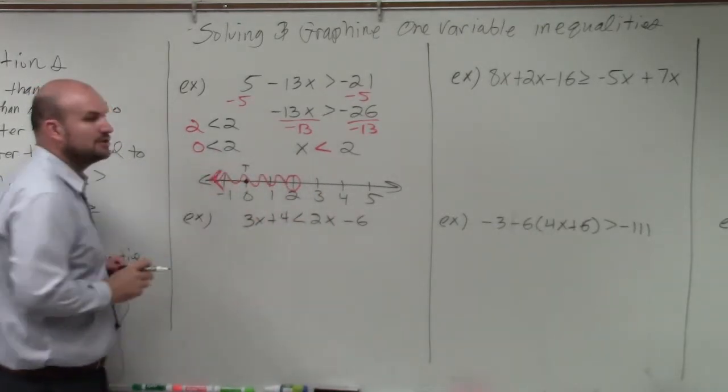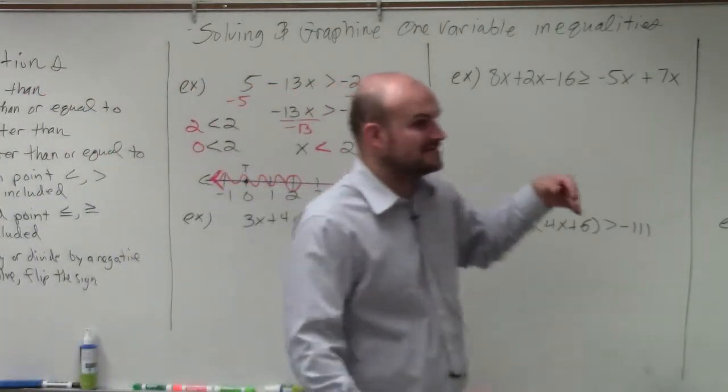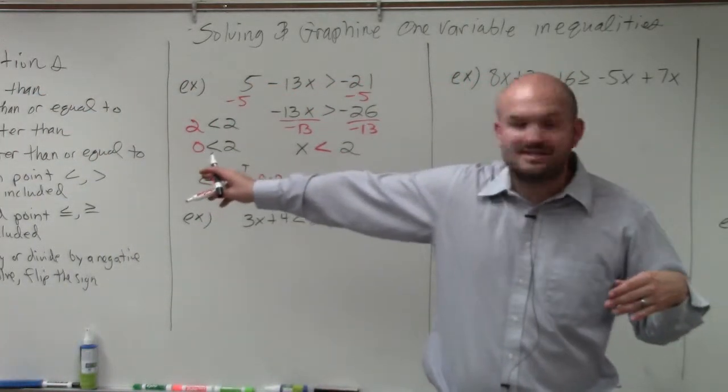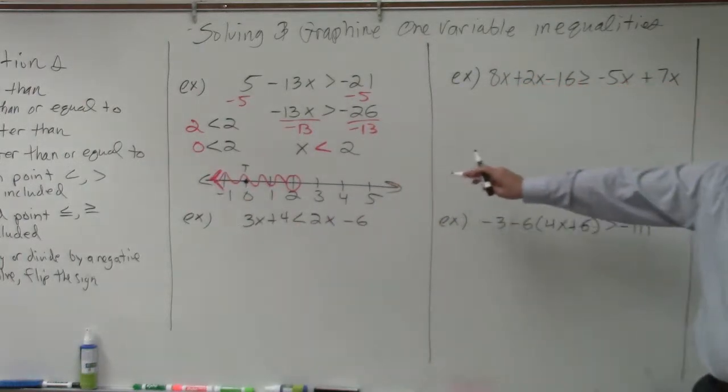Just make sure you also include an arrow, because when I say numbers that are less than 2, that goes all the way to negative infinity. So make sure you include an arrow going left.